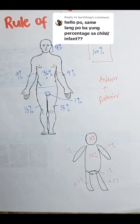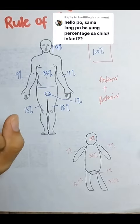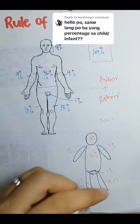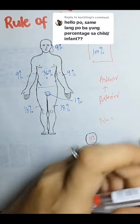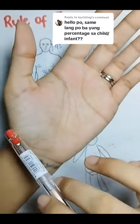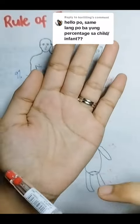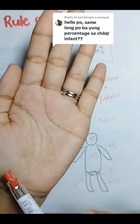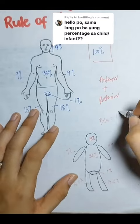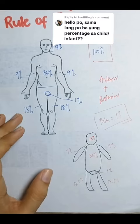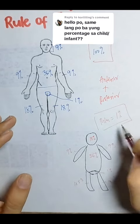May isa pa palang method na ginagamit kung hindi applicable ang rule of 9 — yun yung rule of palm, or yung palmer method. Kung saan na-measure yung mismong palm ng ating patient. Yung size ng palm ng patient, di kasama yung digits, just the palm. Ang isang palm ay equivalent to 1%. Yan ang ating rule of palm.